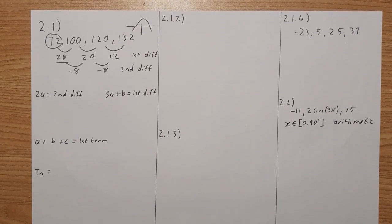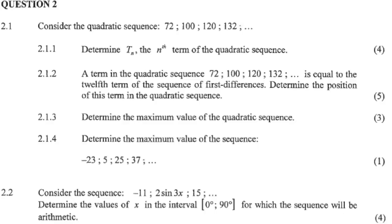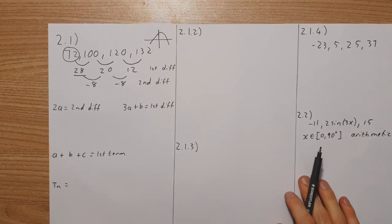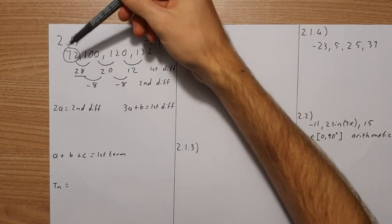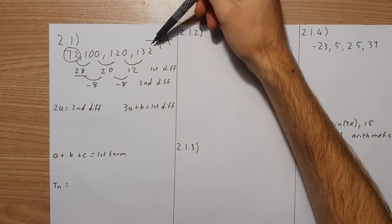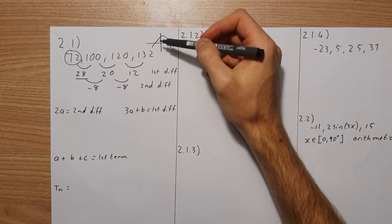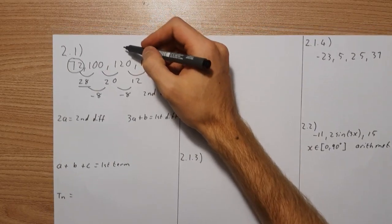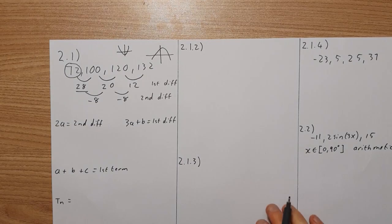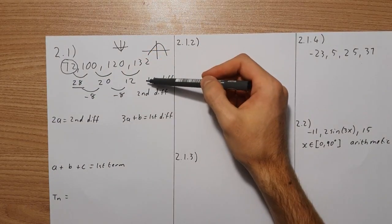Alright, let's have a look at your favourite section of past papers — we're looking at sequences and series. Looking at question 2.1 from the 2021 May/June past paper. Question 1 is always going to be sequences and series. They've given us a quadratic sequence which is increasing. Remember, quadratics are going to look like an upward or downward parabola. We can see the differences: between the first two terms it's 28, the next gap is 20, and then 12, so we have a second common difference of negative 8.